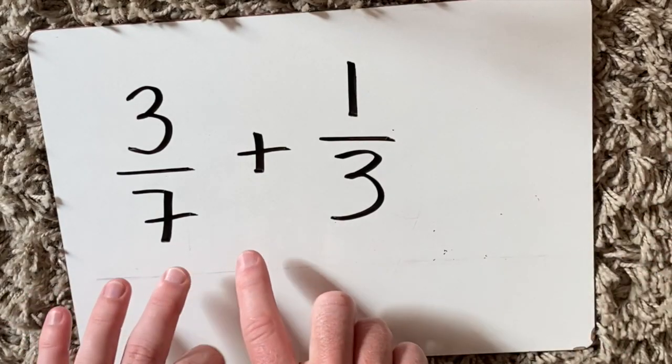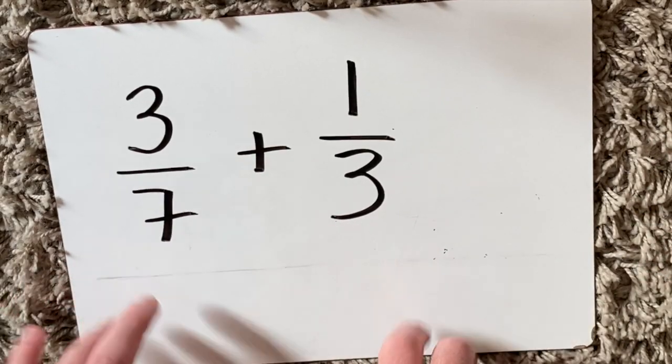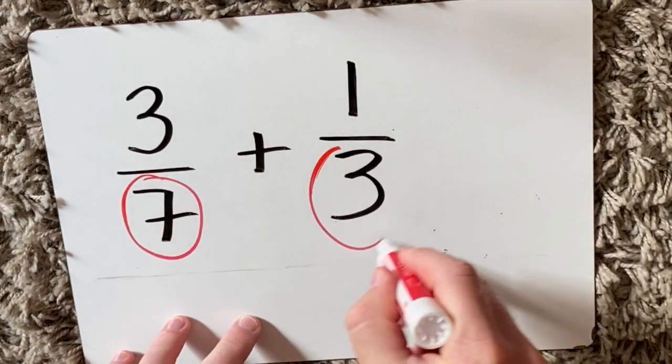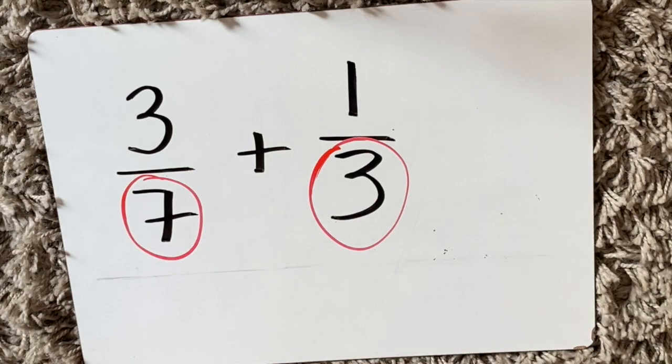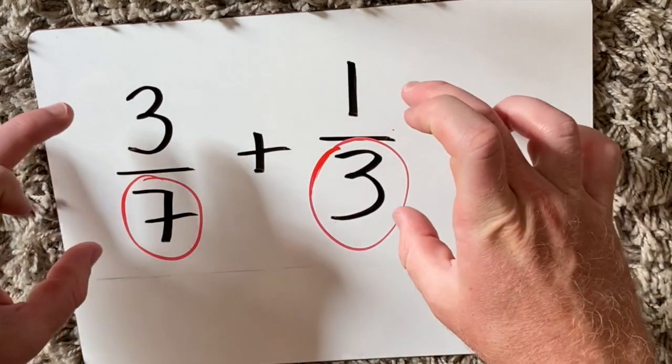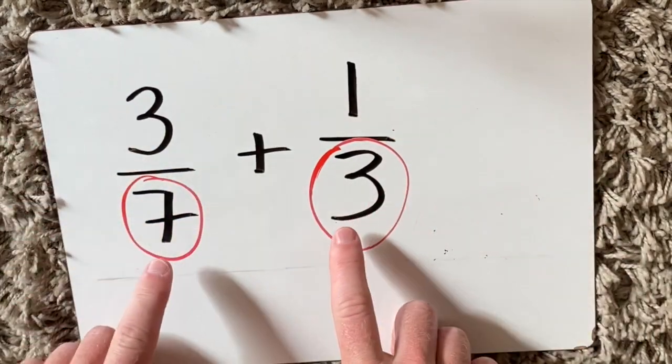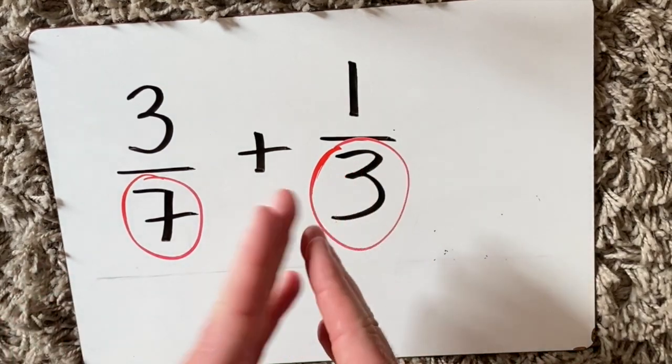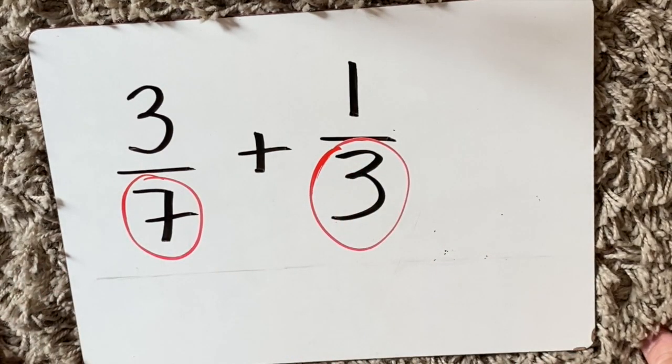The hardest part of adding two fractions together is if they have two different denominators, like these two fractions have here. You first need to change both fractions so they have the same denominator. Once you've done that, it's actually really easy.